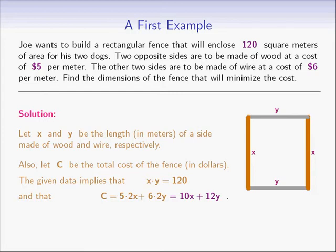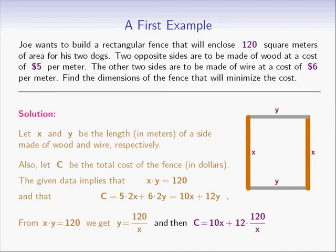We expressed c, the cost, in terms of two variables x and y. But we can now eliminate one and get c as a function of one variable only. From the fact that the product of x and y is 120, we get that y equals 120 over x. We can use that to get that c equals 10x plus 12 times 120 over x, which simplifies to 10x plus 1440 over x.